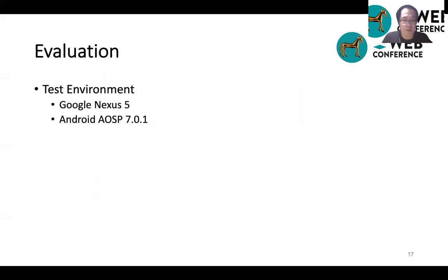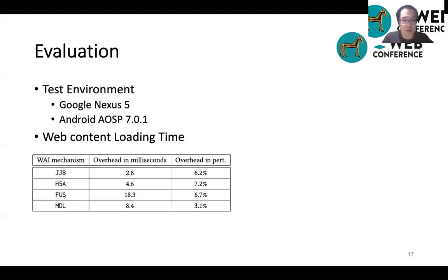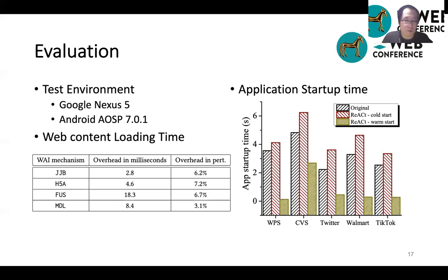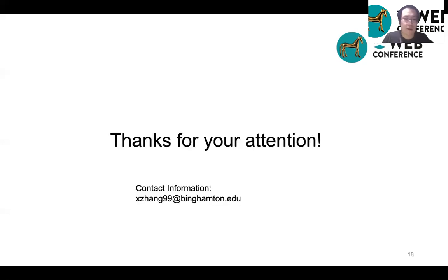We evaluate the React system on a Google Nexus 5 with Android 7.0.1 installed. The table shows the web content loading time overhead of each mechanism. As you can see, it only introduces less than 20 milliseconds of overhead each time when loading the web content. We also evaluate how much overhead our system brings to the app startup process. We selected five commercial apps, and as a result, our system only brings a relatively small overhead.